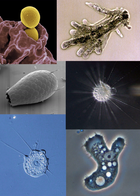Cercozoan amoeboids, such as Euglypha and Gromia, have slender thread-like filose pseudopods. Foraminifera emit fine, branching pseudopods that merge with one another to form net-like structures. Some groups, such as the radiolaria and heliozoa, have stiff, needle-like, radiating axiopodia, or actinopoda, supported from within by bundles of microtubules.